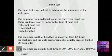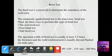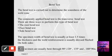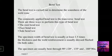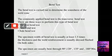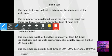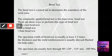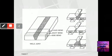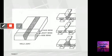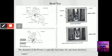The bend test is carried out to determine the soundness of the weld zone. The commonly applied bend test is the transverse bend test, which can be performed in three ways: root bend, face bend, and side bend. The specimen width is usually 1.5 times the thickness, weld reinforcement is dressed flush on both sides, and specimens are usually bent to 90°, 120°, 135°, or 180°.